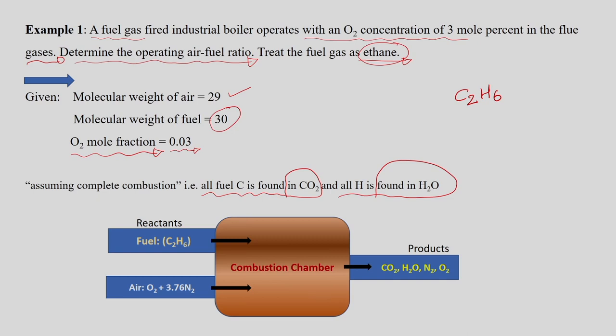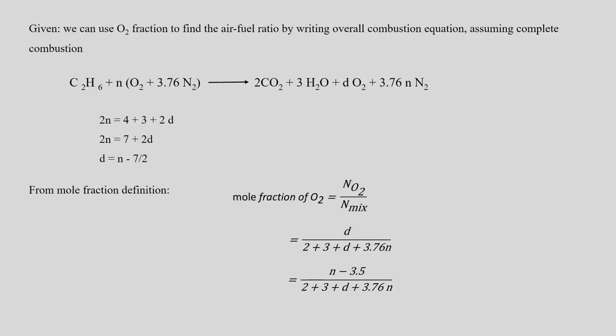We need to find the amount of oxidizer required to burn this fuel in the combustion chamber, producing CO2, H2O, nitrogen, and oxygen (since 3 moles percent oxygen is present in the flue gas). We balance this equation considering the theoretical air supplied for the specific reaction.